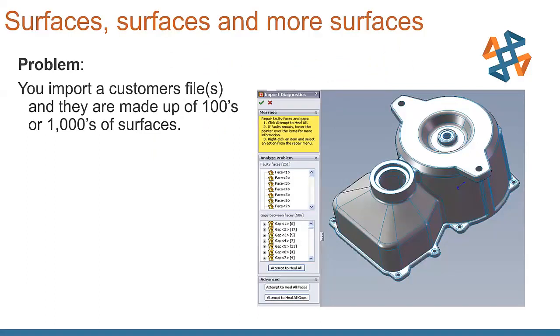Services, services, more services. We've all seen this. We get an import, a customer file, whatever it might be, and it's made up of hundreds or thousands of surfaces. You go to import diagnostics, and it gives you this laundry list of bad faces, gaps between faces. All those blue lines that we're seeing in there is some kind of small gap between each of the surfaces that are out there. We know if we hit attempt to heal all at this point, it's going to take a long time. So how do we get around that?